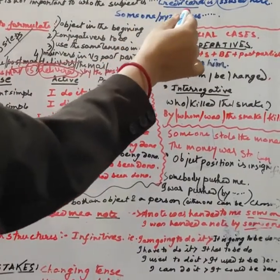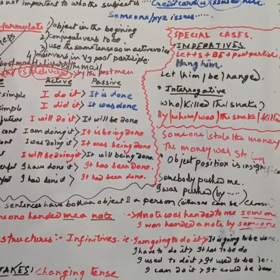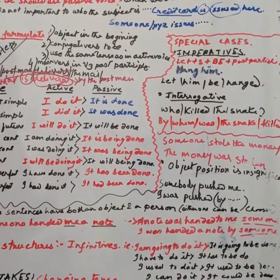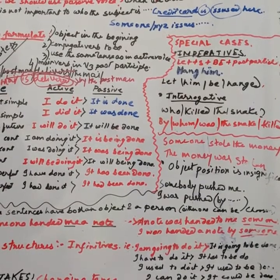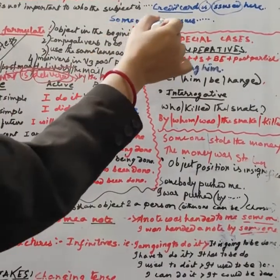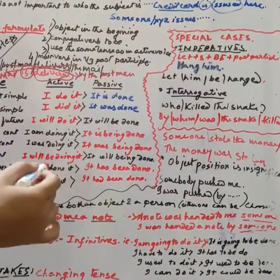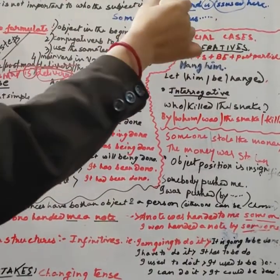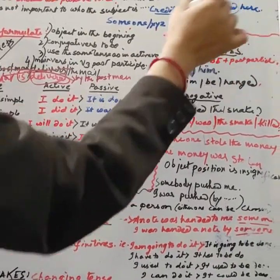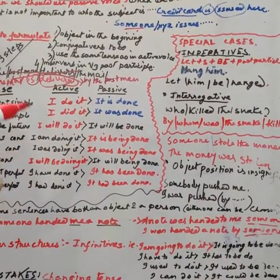For example: 'Credit card is issued here.' Who issues it? We need not know — someone, somebody, XYZ. So someone issues the credit card here, but our main point is that the credit card is issued here. Who does it is ignorable.